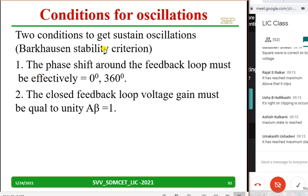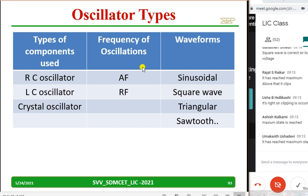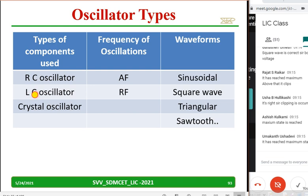Now the two conditions to get sustained oscillations — Barkhausen's criterion: one, total phase shift around the feedback loop gain should be equal to or greater than 1; and phase shift should be 0 or 360 degrees. These are the two conditions for oscillations. Different types of oscillators: we classify based on components — RC oscillator, LC oscillator, crystal oscillator — and based on frequency: audio frequency, radio frequency — and based on waveform: sinusoidal, square wave, triangular, sawtooth.